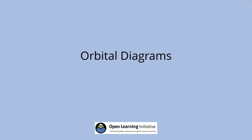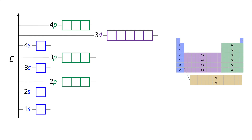This is an introduction to orbital diagrams. On the left we have an energy level diagram showing the subshells and the orbitals within the subshells in terms of increasing energy as we go upward, and on the right we have a periodic table for reference. Orbital diagrams are essentially electron configurations but they show a little more information.